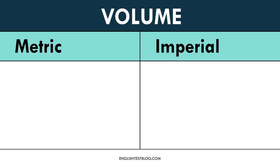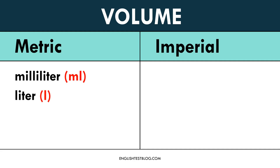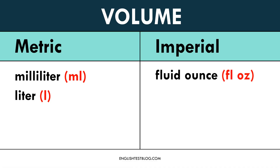Now let's compare volume. In the metric system, the milliliter is used for small liquid amounts, like a drop. The liter is used for drinks or fuel — one liter equals 1,000 milliliters. In the imperial system, one fluid ounce is roughly 29.57 milliliters. It's important to note that fluid ounces measure volume, not weight, unlike the regular ounce.